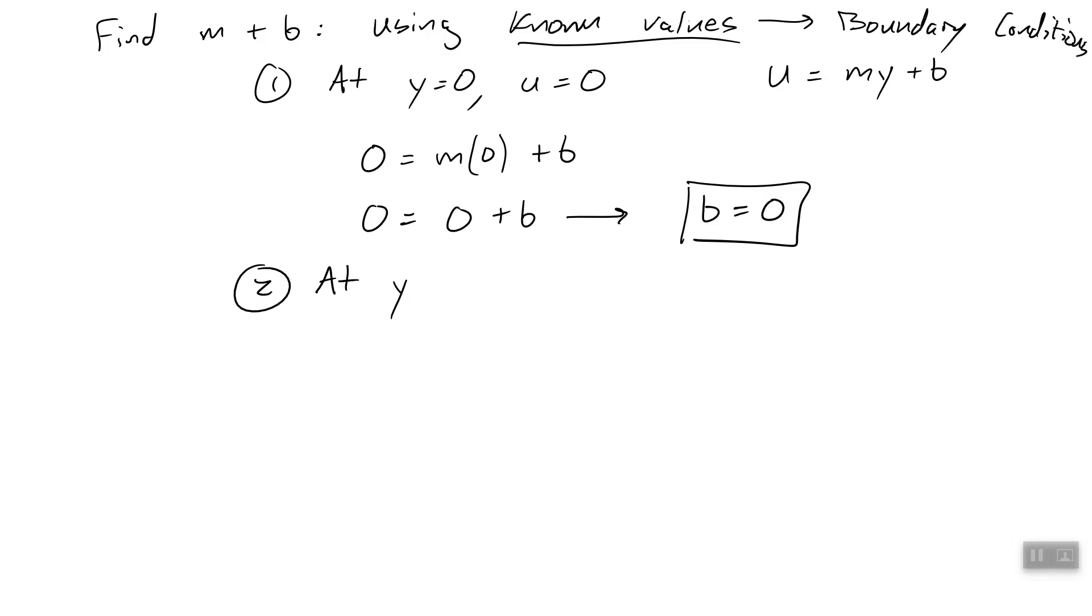All right, so now at y equals h, or at the moving plate, we know that the velocity is v, again because of the no-slip condition. So let's plug that into our equation. So u, which is v, is equal to m, which we're trying to solve for, times y, which is h. Y is h, u is v, plus b, but b is zero. So we're just going to leave that off. Now we can solve for m. m is just equal to v divided by h.